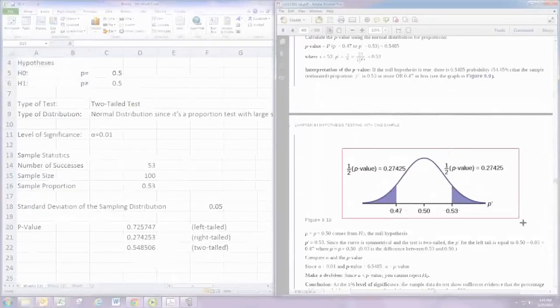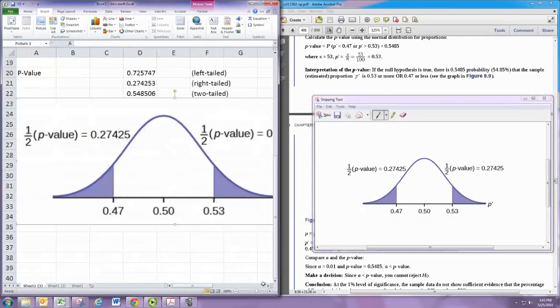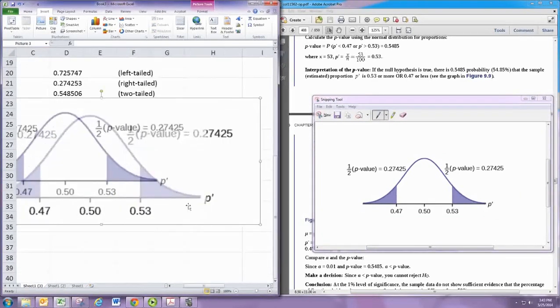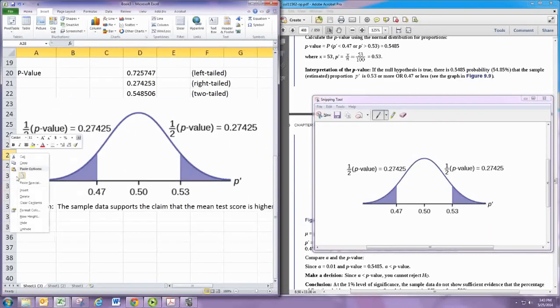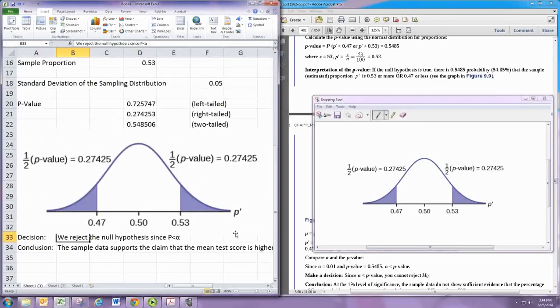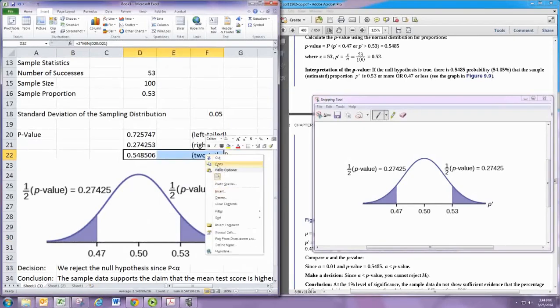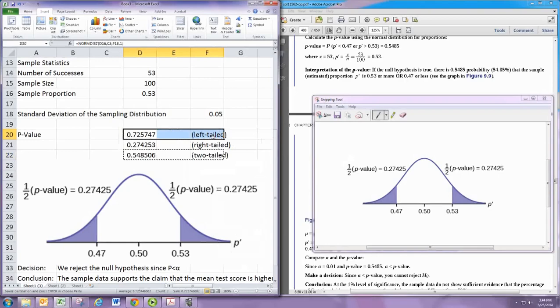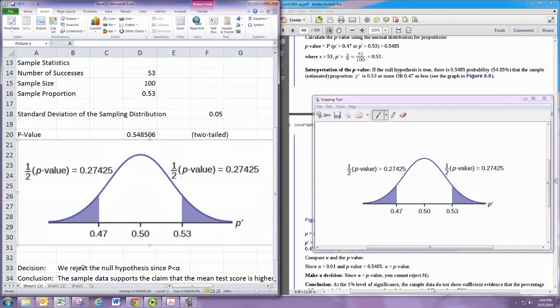Here's a nice picture. Alright, so what happens here, we actually don't reject the null this time, because the p-value is greater than alpha, right?